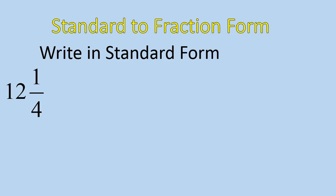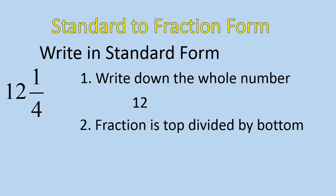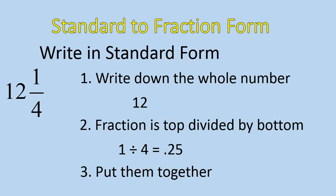Let's do one more — this one's going to be a little bit more complicated. 12 and 1 quarter. Write down the whole number: 12. Then do the fraction — that's the top divided by the bottom. 1 divided by 4 is equal to 0.25. Put them together and you get 12.25. That's how we write from fraction form into standard form.